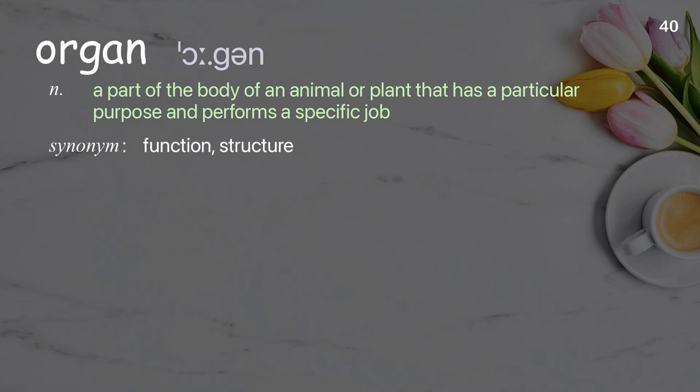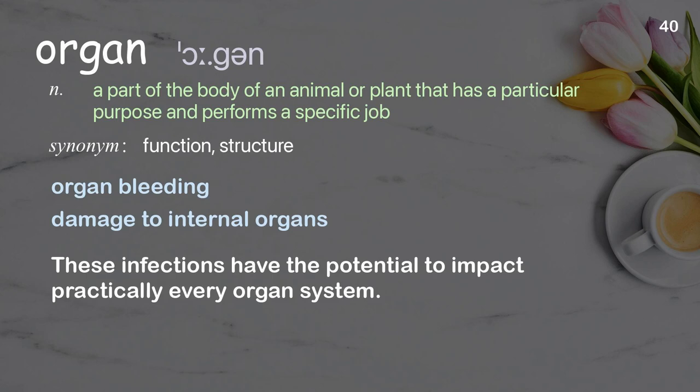Organ: a part of the body of an animal or plant that has a particular purpose and performs a specific job. Examples: organ bleeding, damage to internal organs. These infections have the potential to impact practically every organ system.